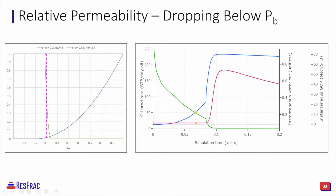If you take the most extreme oil rel perm curve possible — reverting to an initial saturation of 30% and making almost a vertical line for oil rel perm — you see a stabilized oil decline until hitting bubble point, which causes a jump to the right. Oil rel perm diminishes very quickly as GOR rises, and water cut increases alongside, because the relative permeability of oil has dropped significantly.